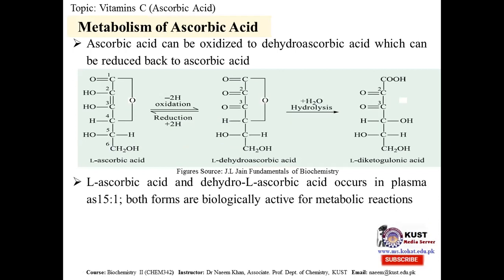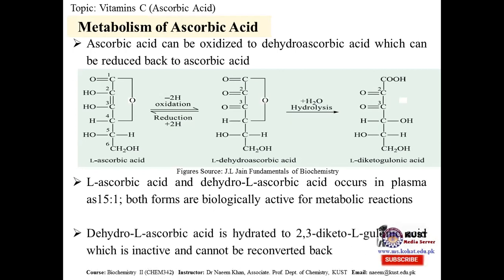Ascorbic acid and dehydroascorbic acid occur in plasma at a ratio of 15 to 1. Both forms are biologically active for metabolic functions — meaning the 15 parts as ascorbic acid and 1 part as dehydroascorbic acid are both active forms for the biological functions known for vitamin C.